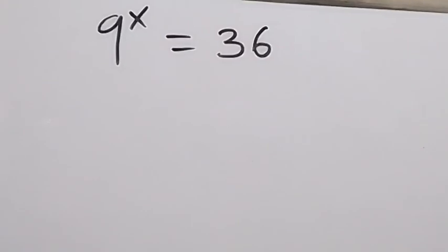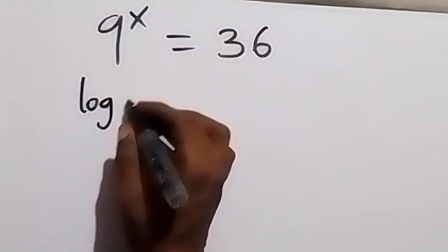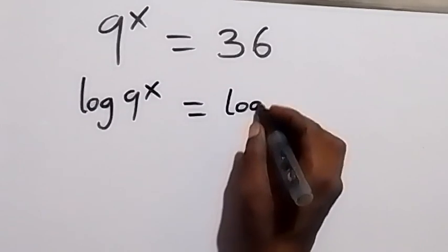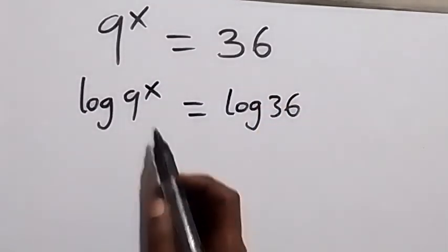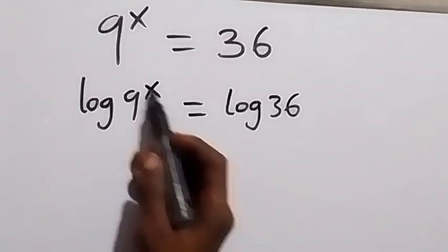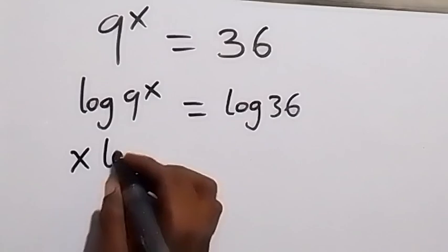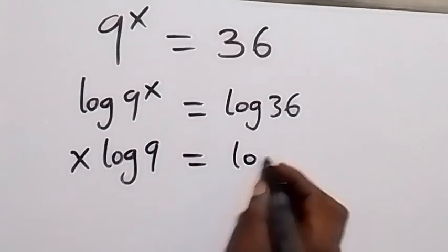Hello, you are welcome. How to find the value of x in this problem? From here, let's take the log on both sides. We have log 9 raised to power x equals to log 36. In the next step, applying the power law of logarithms, we can take x to the back here. We have x log 9 equals to log 36.